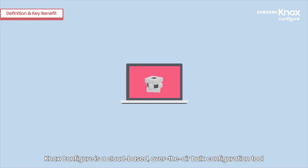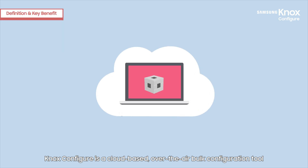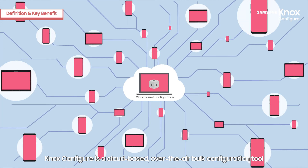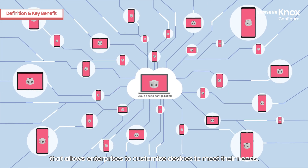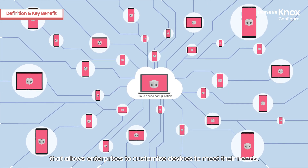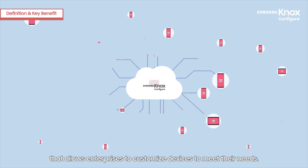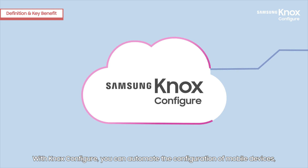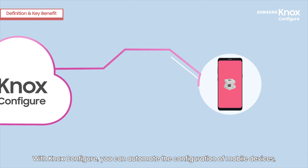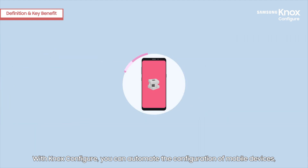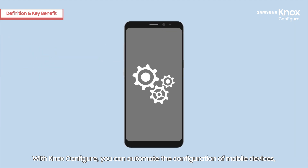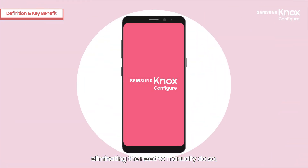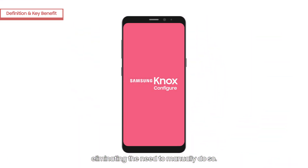Knox Configure is a cloud-based, over-the-air bulk configuration tool that allows enterprises to customize devices to meet their needs. With Knox Configure, you can automate the configuration of mobile devices, eliminating the need to manually do so.